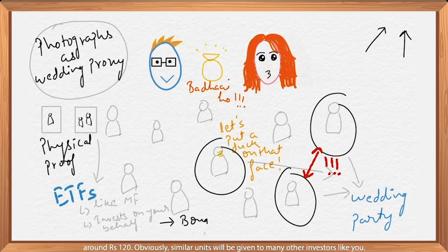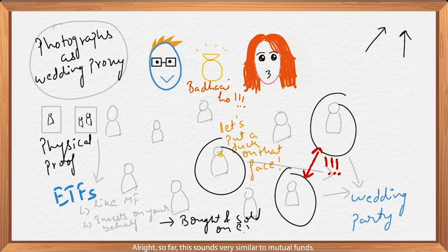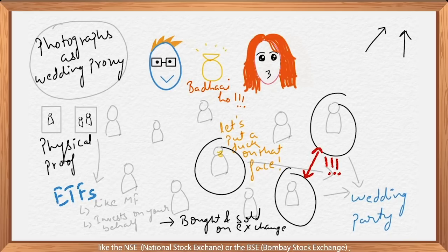The ETF will purchase these securities by creating a fund and then give you units or shares of that fund, which will be much cheaper for you — around 120 rupees. Similar units will be given to many other investors like you. So what's the difference from mutual funds? ETFs can be bought and sold on an exchange like the NSE, the National Stock Exchange, or the BSE, the Bombay Stock Exchange, so their price changes during the entire trading day, while mutual fund unit prices are determined once daily.